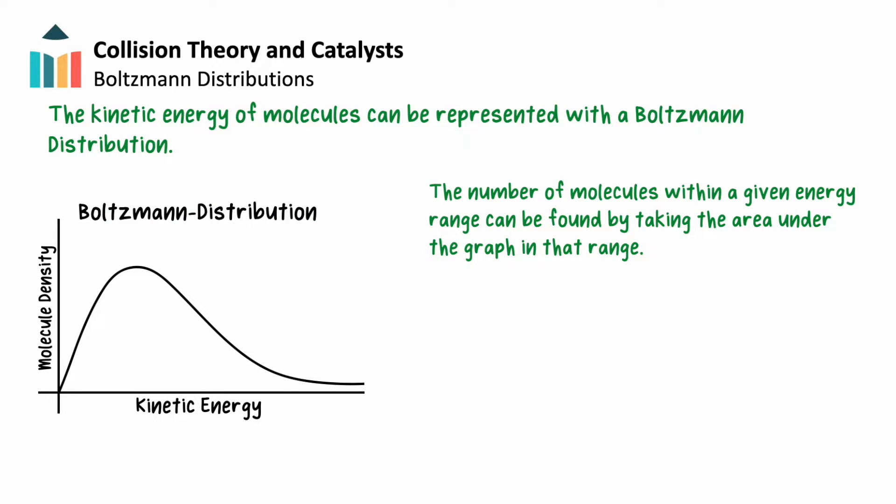Molecules have a range of kinetic energies that can be represented as a Boltzmann distribution. The x-axis is the kinetic energy. The y-axis is the number density of molecules, a measure of how many molecules have a given energy. To find the number of molecules within a given energy range, you can measure the area under the graph over that range.